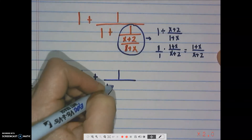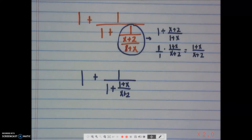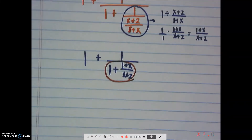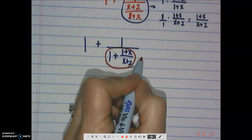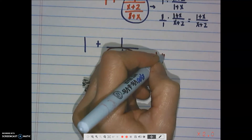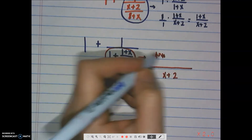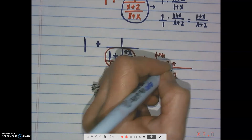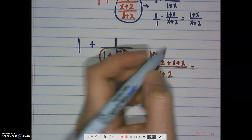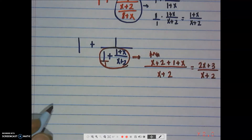Now we have 1 plus 1 plus (1+x)/(x+2). The next piece to deal with is adding 1 plus (1+x)/(x+2). Our common denominator is x plus 2. The first fraction is missing x plus 2, so we multiply it. The second fraction already has the common denominator, so we keep its numerator. When we add those together we get (2x+3) over (x+2), and that goes in place of that circle.